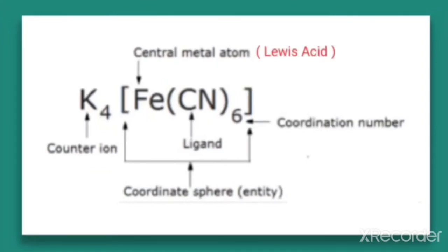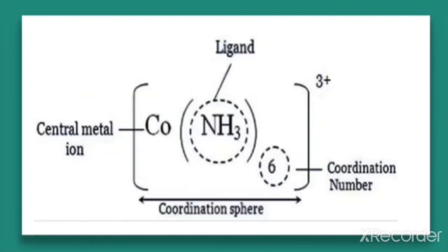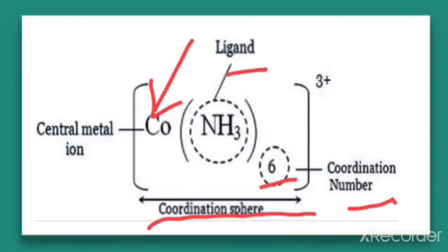The central metal atom acts as a Lewis acid and the ligands act as Lewis bases, because there is a formation of a coordinate covalent bond between the ligand and the central metal atom, in which the ligands contribute electrons for bond formation to the Fe. That is why such compounds are called coordination compounds. In another example, the central metal ion is Co, NH3 (ammonia) is the ligand, 6 is the coordination number, and the whole entity is within the coordination sphere.